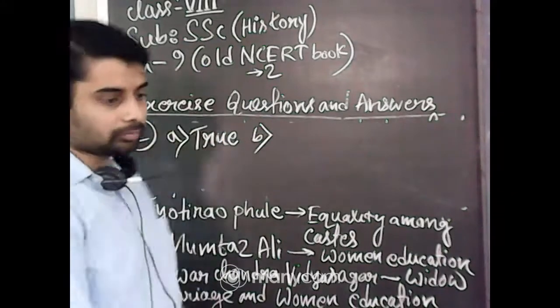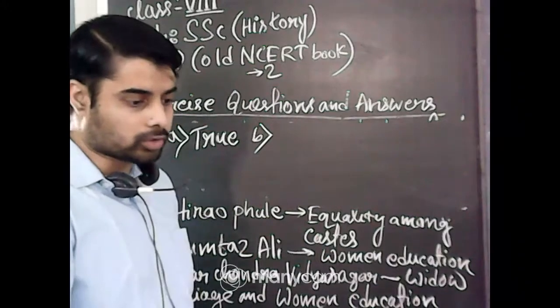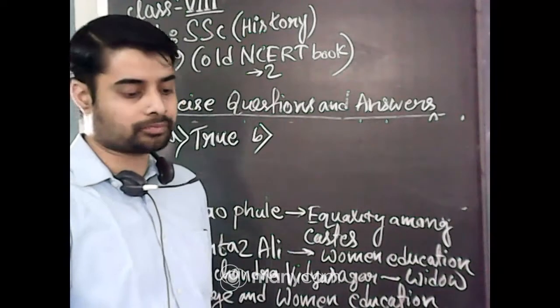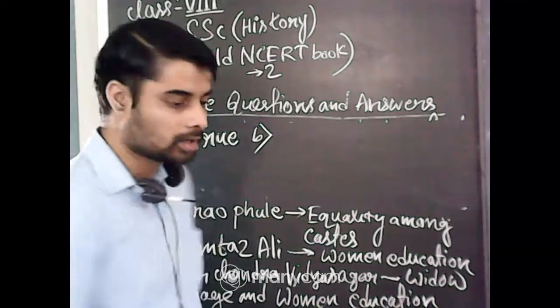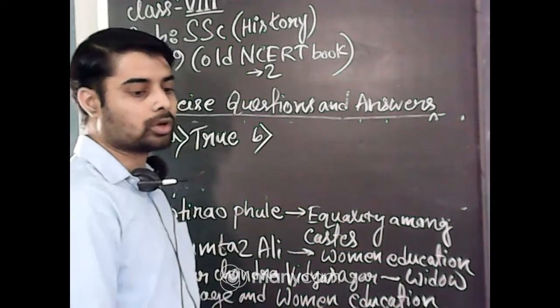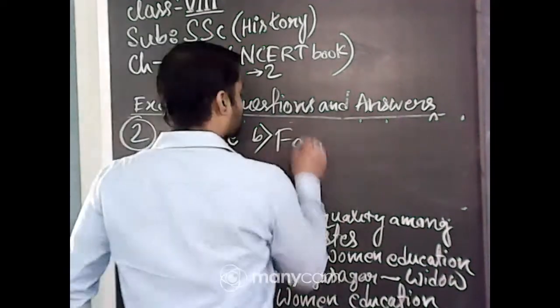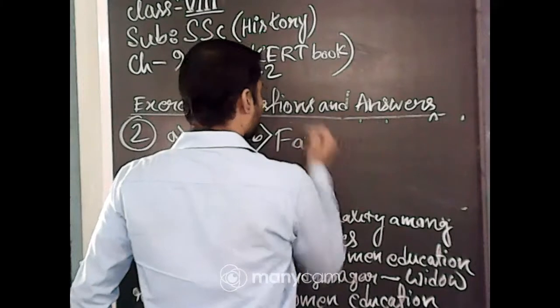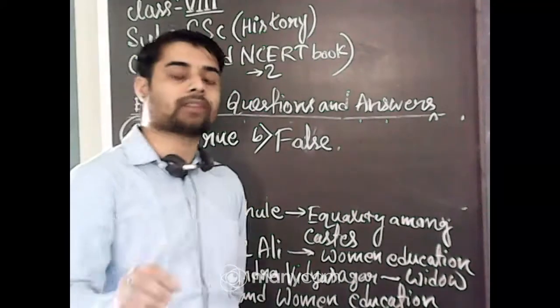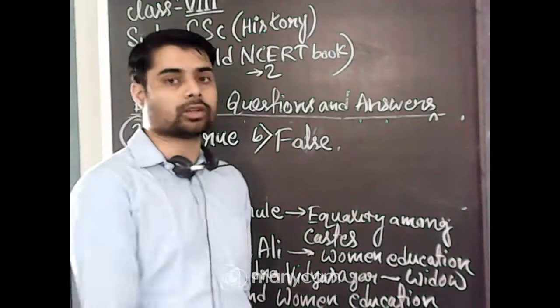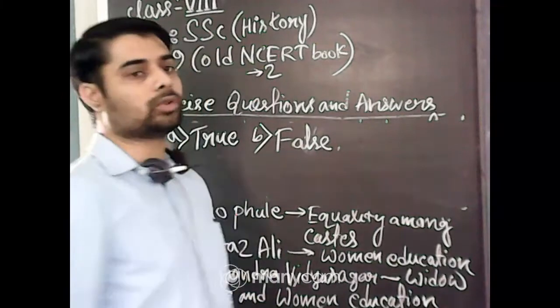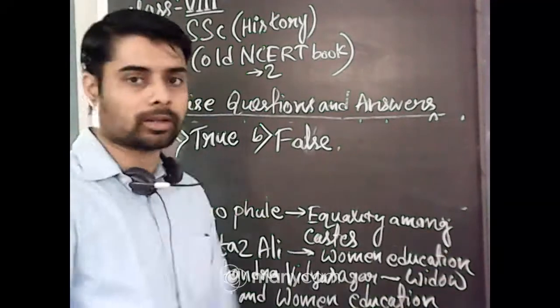Number B, that social reformers had to discard the ancient texts in order to argue for reform in social practices. This is also a false statement. Because most of the social reformers, they also pointing out from the ancient texts that these practices were not supported by the ancient scholars also.